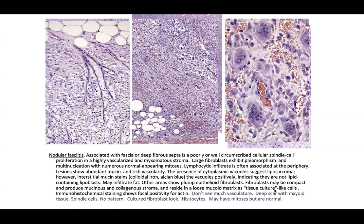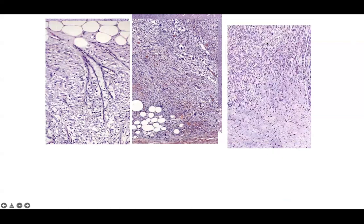Lesions can have abundant mucin-rich vascularity and cytoplasmic vacuoles mimicking liposarcoma — do MDM2 to check for overexpression. Mucin stains (colloidal iron, Alcian blue) would be positive if vacuoles are mucin rather than lipid droplets. Nodular fasciitis can infiltrate fat and show plump epithelioid fibroblasts producing mucin and collagen. The key descriptor is cells residing in a loose mucoid matrix in a tissue culture-like pattern — the classic picture of nodular fasciitis.